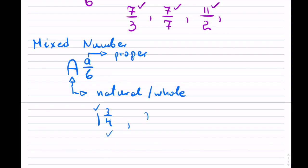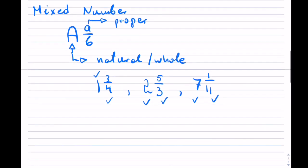Now, be careful — if you had a whole component combined with an improper fraction, that would not be considered a mixed number. So that would be neither proper, improper, nor a mixed number. If we were given 7 and 1 over 11, this would be considered a mixed number because it's a whole component plus a proper fraction. The mixed number notation is the short way of writing, for example, 1 plus 3 over 4 — we skip the addition and bring them together to make it more compact.